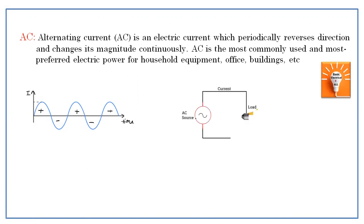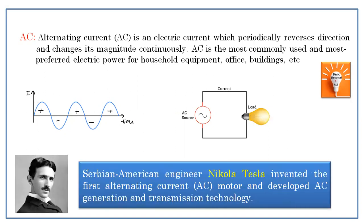If you see the circuit here, this is a simple circuit which has an AC source as well as a load — the load is a bulb. In this circuit, the alternating current flows alternatingly, and this bulb works based on the AC supply only. Serbian-American engineer Nikola Tesla invented the first alternating current motor and developed the AC generation and transmission technology.